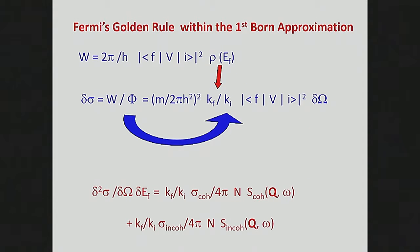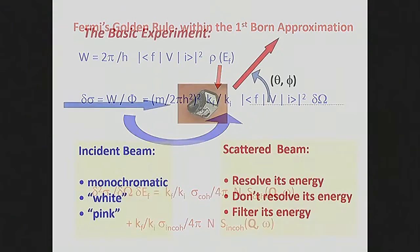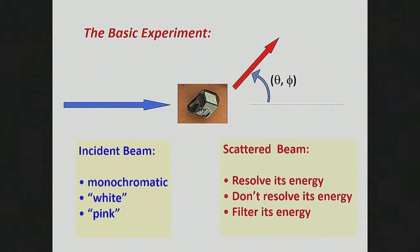The way we think about any scattering experiment — basically what we're thinking about is the rate at which neutrons come in, scatter off your sample, and go off in a particular direction. Because to understand our scattering experiment, we want to understand the relative number of neutrons that have been scattered off in all these different directions. And if we're doing inelastic scattering, for a given direction, we want to understand the energy spectrum as well — the angular pattern of the scattered neutrons and, for a given angle, the energy distribution.